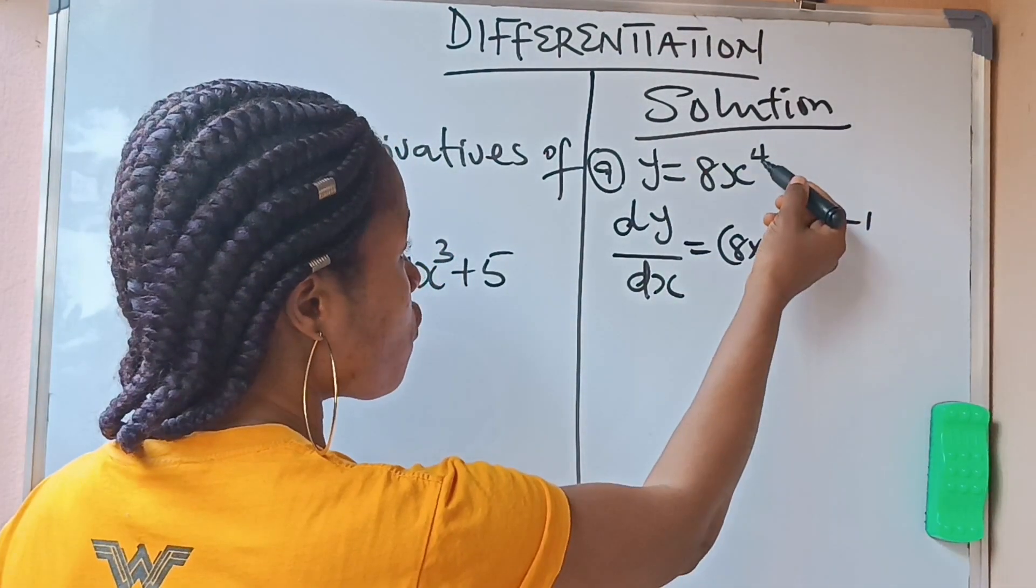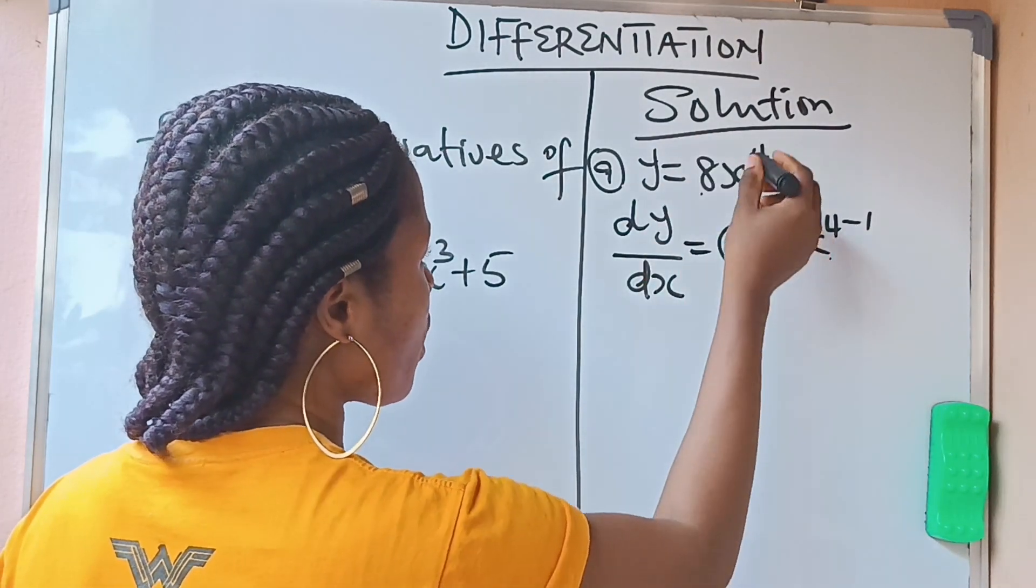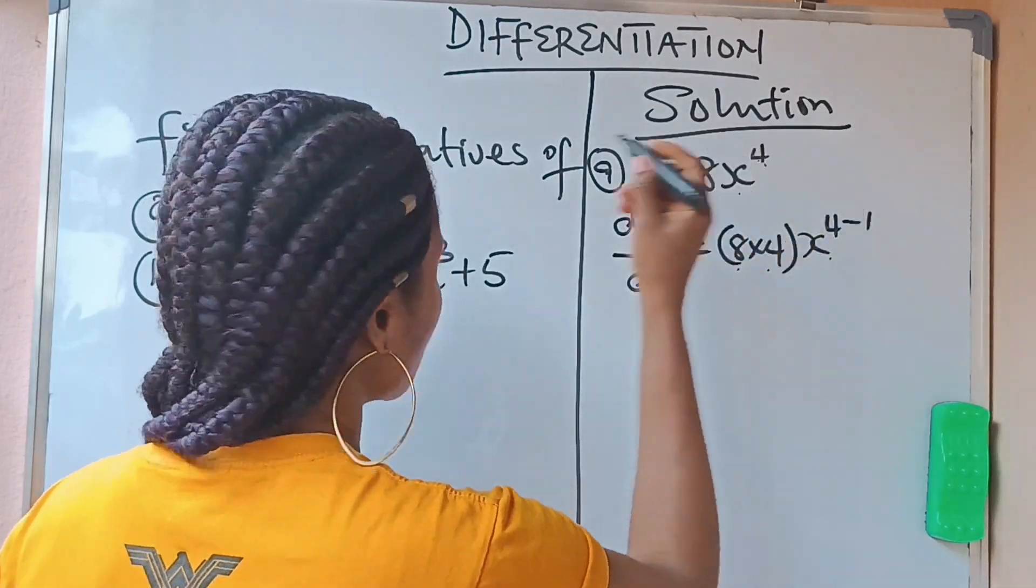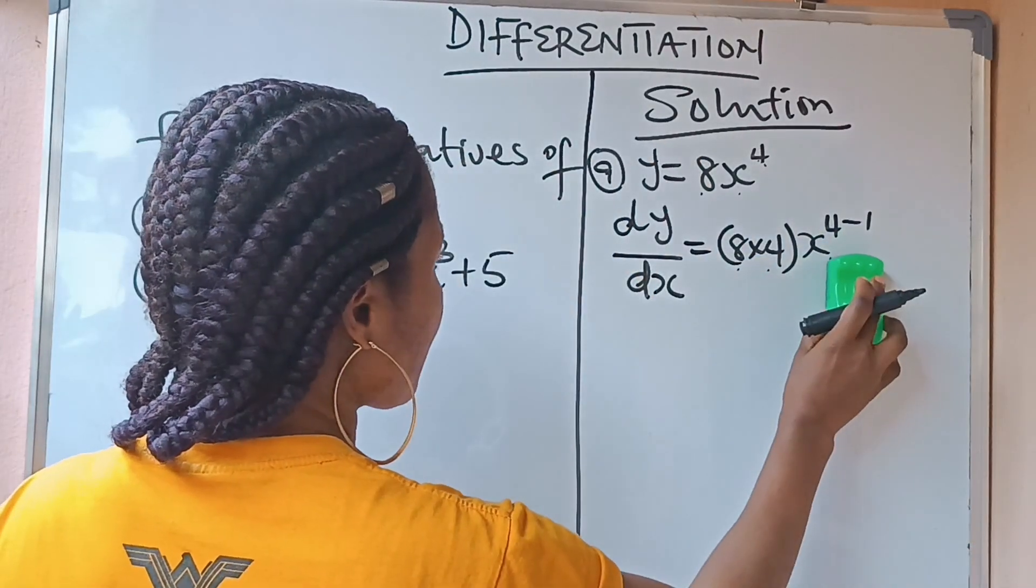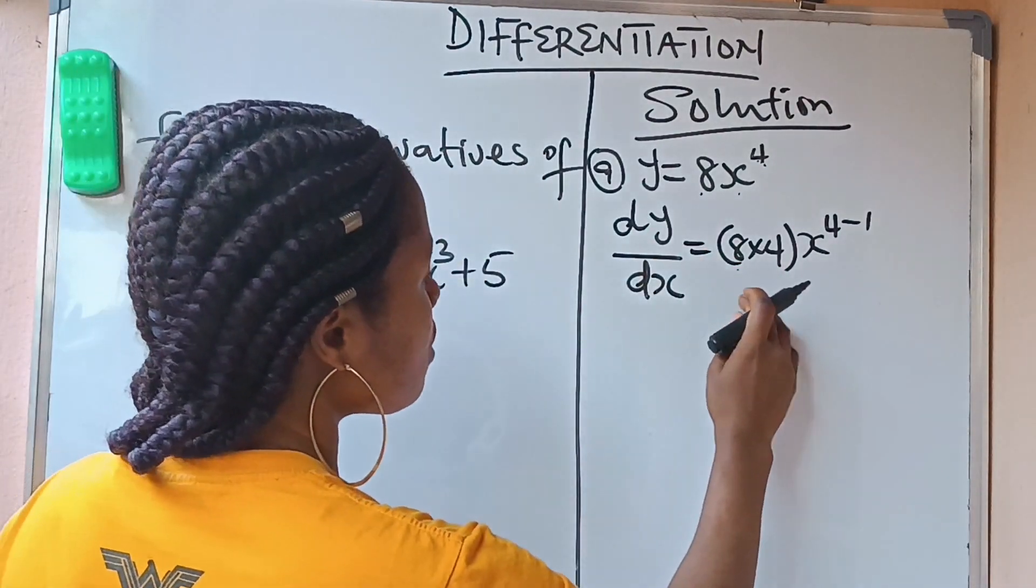Do you understand what I did? 4 times 8, 4 times 8, okay? Write your x for them. You write your x for them. Then 4 minus what? 1. That is all I did. Now, having done that, you go ahead and solve this.